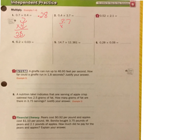3.7 times 0.4, 7 times 4 is 28, 4 times 3 is 12, plus 2 more, let's see, 12 plus 2 is 14. Out one, out two, okay, and then I gotta go in to 1, 2, so my answer is 1.48.